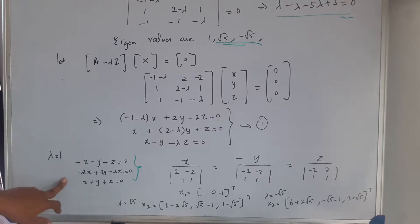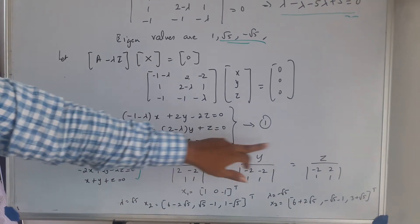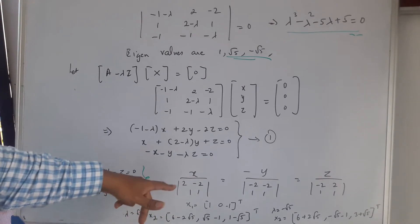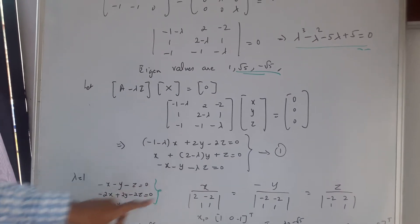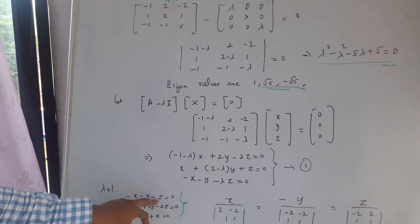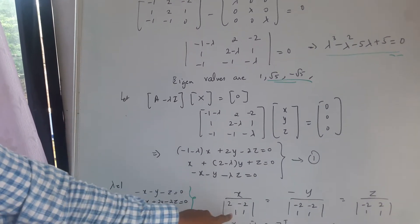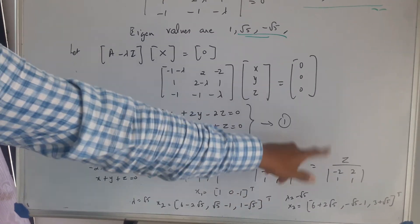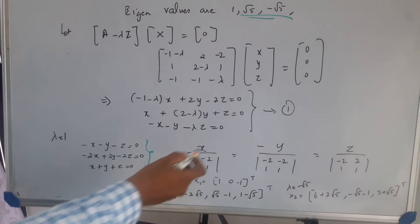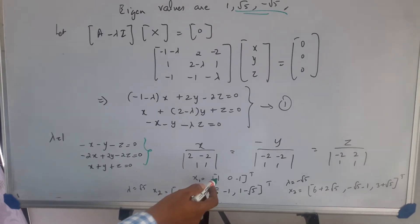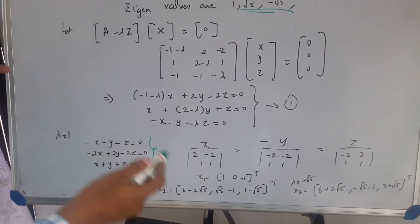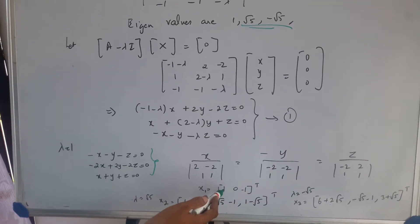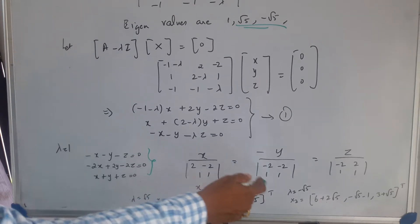To find the values of X, Y, and Z, I compute using the coefficients of X and Y corresponding to Y and Z. After computing, I get the result as 4, 0, and minus 4, which is 4 taken outside, so I get 1, 0, minus 1 transpose.